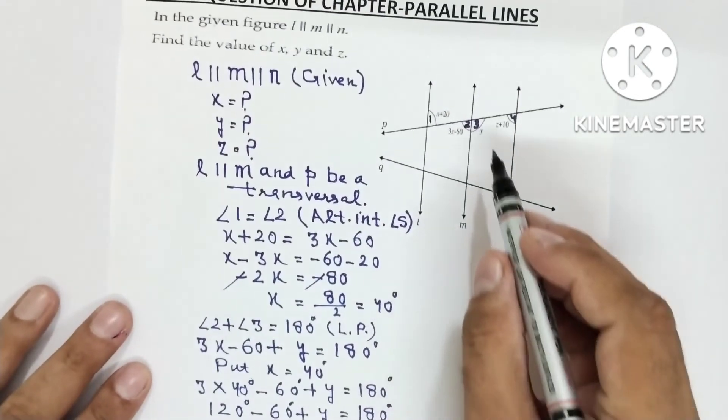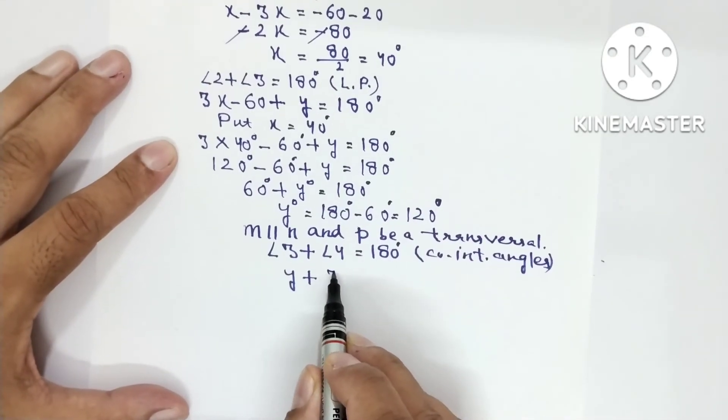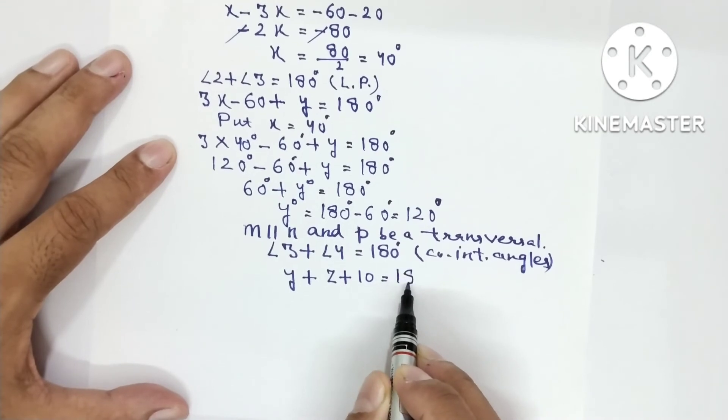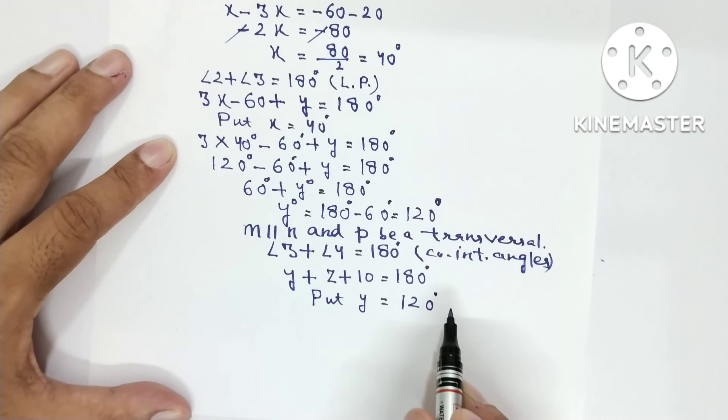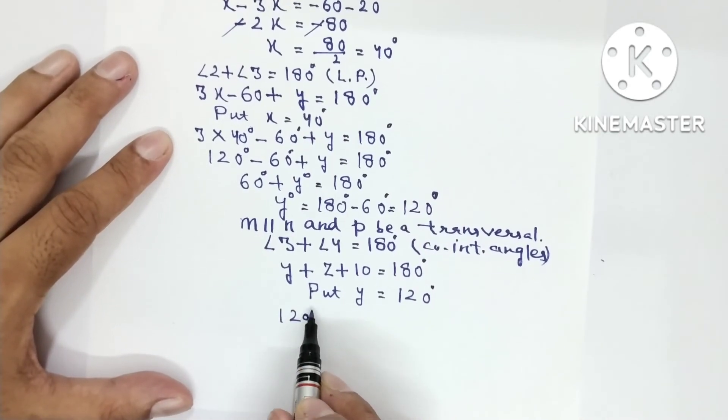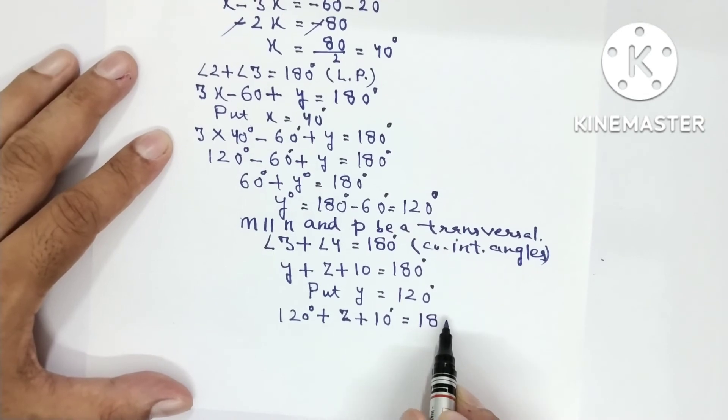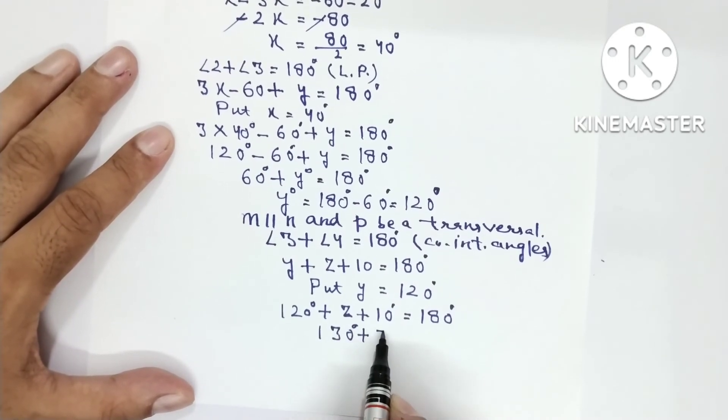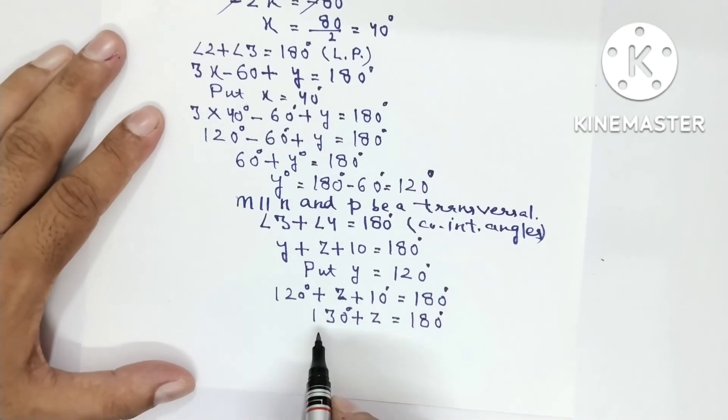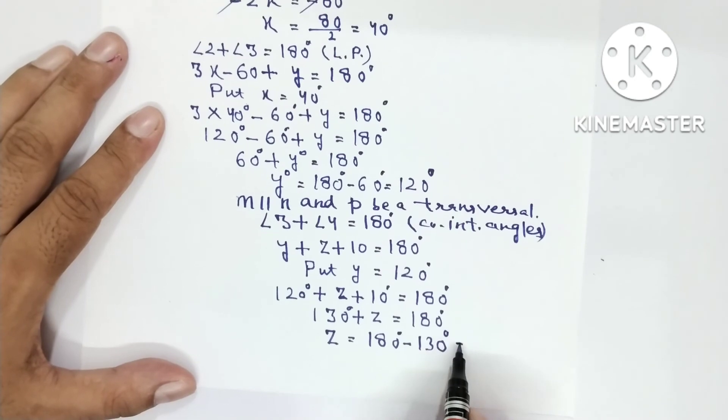Angle 3, how much it is? Y. Angle 4 it is Z plus 10 is equal to 180 degree. So you have already found the value of Y, put Y is equal to 120 degree. So we will substitute here, 120 degree plus Z plus 10 degree is equal to 180 degree. 120 plus 10 is 130 degree plus Z is equal to 180 degree, so Z can be found easily. It is 180 degree minus 130 degree and that is equal to 50 degree.